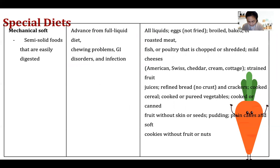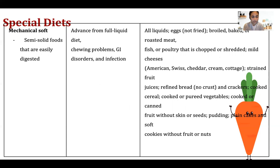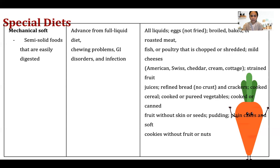After full liquid diet, the diet progresses to mechanically soft diet — regular food that is blenderized or mashed. It consists of semi-solid foods that are easily digested, useful for patients with chewing problems, GI problems, and infection. Foods included are all liquids, eggs that are not fried, broiled, baked, or roasted meats, fish and poultry that are chopped or shredded, juices, and similar foods.